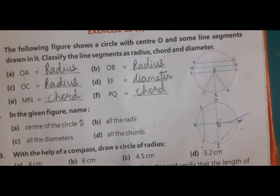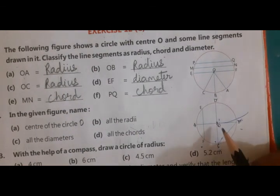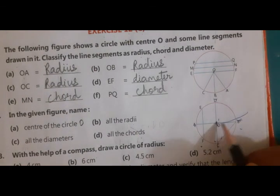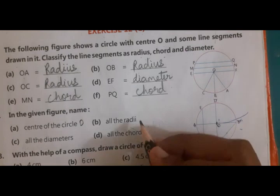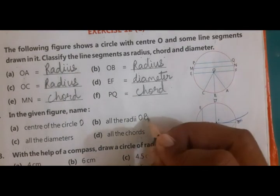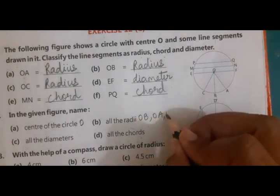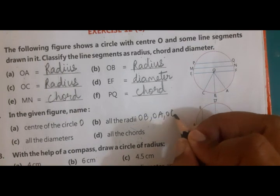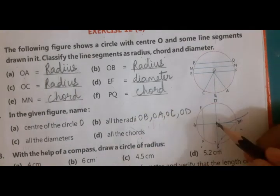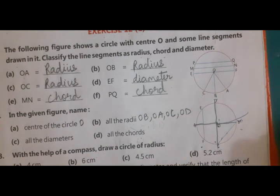All the radii. All the radius means from the center, whichever line has been passed from the center to the circle. So OB, OA, OD, OC. From the center, one, two, three, four lines are passing.